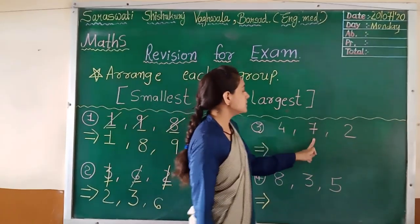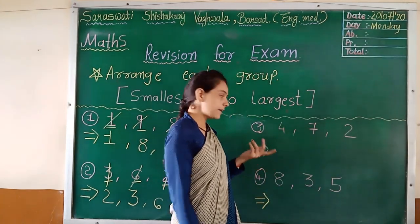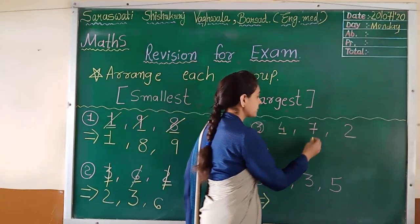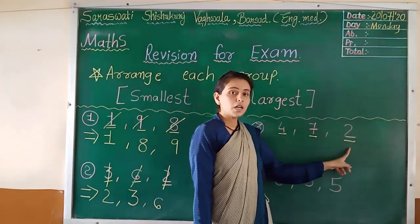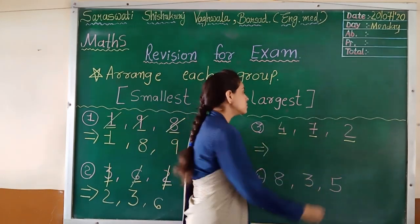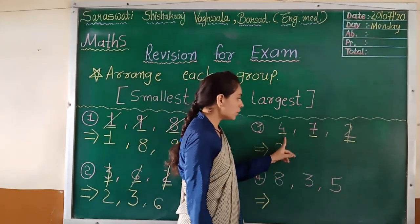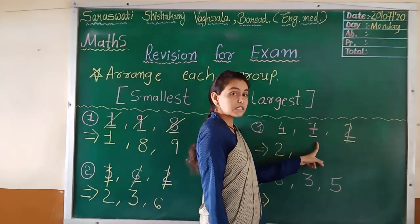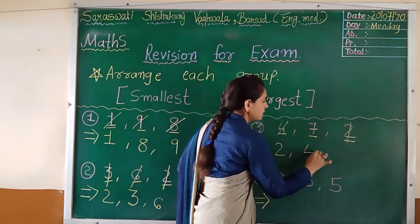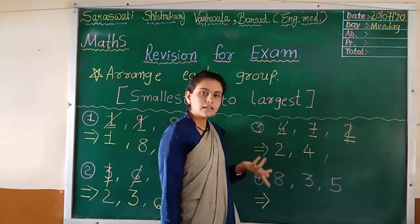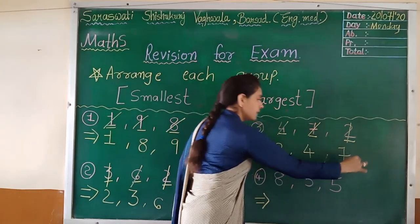Third number: four, seven, two. First, what we have to do? Draw underline. Four, seven, two. Now check. Which is the small number? Two, right? So, two cut from here and place here. Four and seven. Which is the small number? Four, right? So, four cut and place here. And last, only seven remains. So, seven cut and place here.